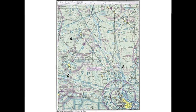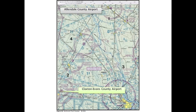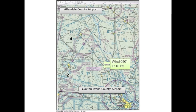Here's figure 24. You can find Allendale County Airport at the top of the figure near area 1. Claxton Evans County Airport is in the lower left portion of the figure near area 2. Wind is from 090 degrees at 16 knots.